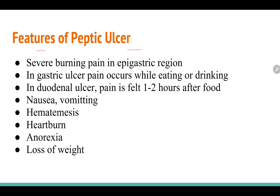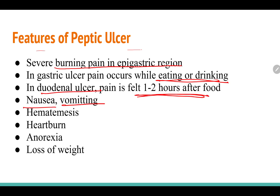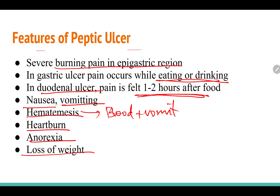Features of peptic ulcer include severe pain in the epigastric region. In gastric ulcer, pain occurs when eating or drinking. In duodenal ulcer, pain is felt one to two hours after food. Other symptoms include nausea, vomiting, hematemesis (blood in vomit), heartburn, anorexia (loss of hunger), and loss of weight.